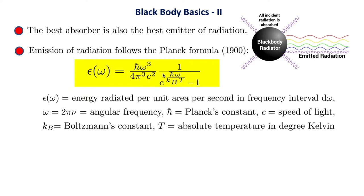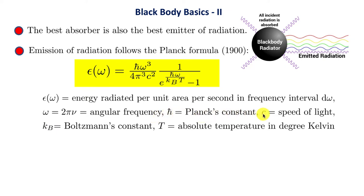Let me explain the symbols in the Planck formula. ε(ω) is the energy radiated per unit area of the blackbody per second in the frequency interval between ω and ω + dω. The frequency ν gives cycles per second; multiplied by 2π it becomes the angular frequency ω. ħ is Planck's constant, c is the speed of light (3 × 10⁸ m/s), k_B is Boltzmann's constant, and T is the absolute temperature in Kelvin.